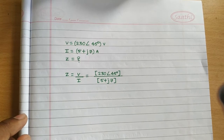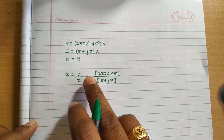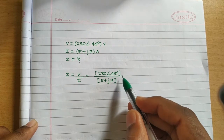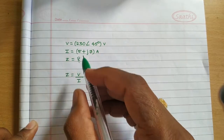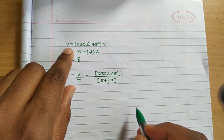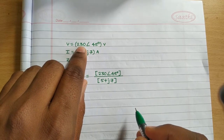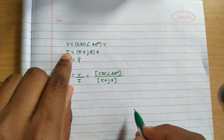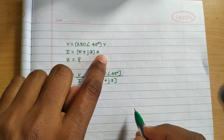Hello friends and welcome back. Today we will see how to do calculations when quantities are given in complex numbers. Many times electrical quantities are represented in rectangular form or polar form. Here, suppose your voltage is given in polar form: 230 volts at an angle of 45 degrees — this is in polar form — and current is given in rectangular form: 5 plus j7 amperes.